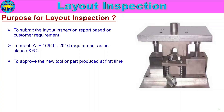Another reason is to approve a new tool or part produced for the first time. When a new tool or new product is produced for the first time, we check all the dimensions of the product. We verify that the product dimensions match the drawing. We need to check all the parameters — that is why we need layout inspection.